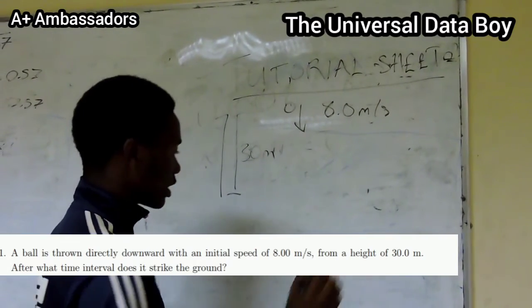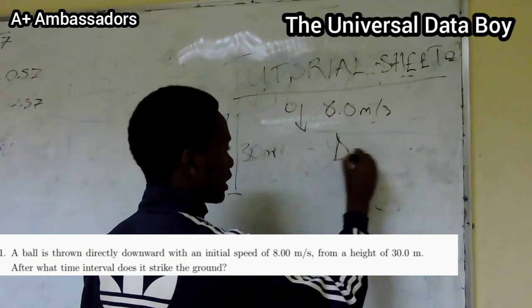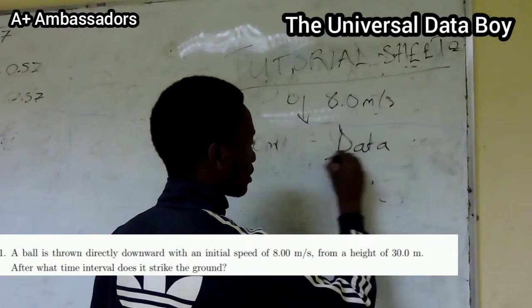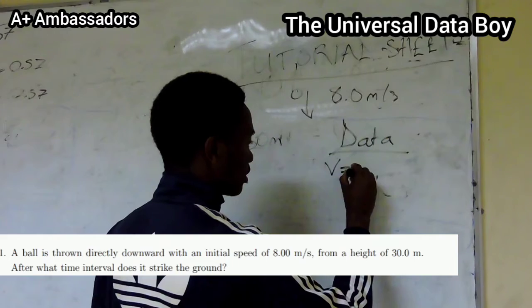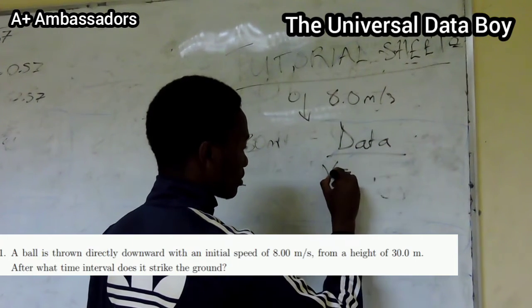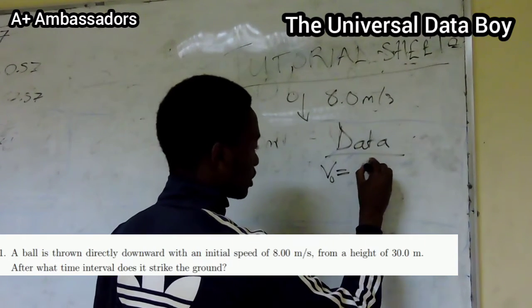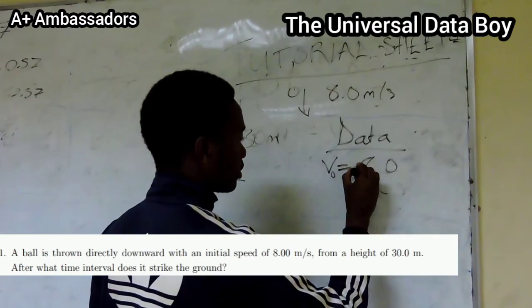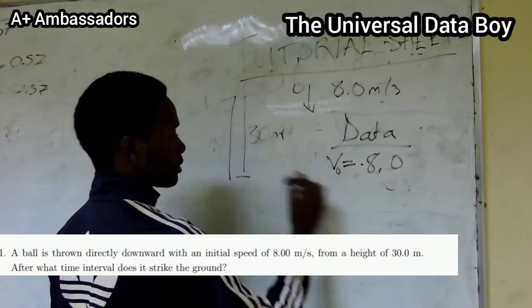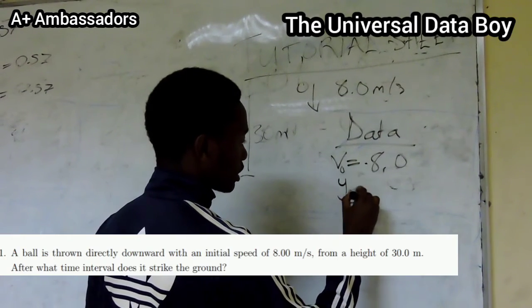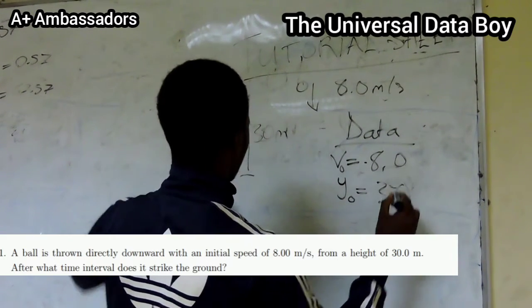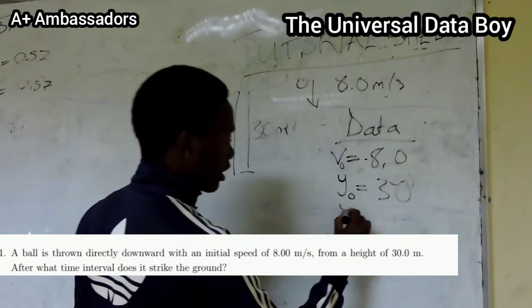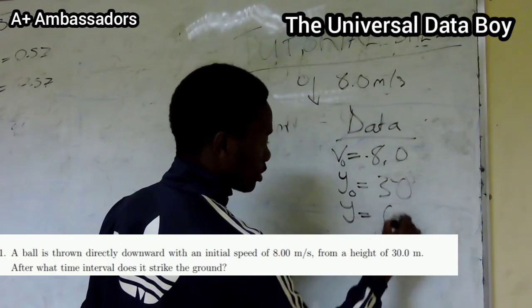Now we look at the SUVAT equations where the data has been given. So our data is: velocity initial V₀ is equal to 8.0. Since it is going down, it's going to be negative. Our Y₀ is going to be 30, and it's positive because it's 30 up there. Our Y final is going to be 0, and this is our change in Y.